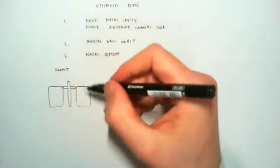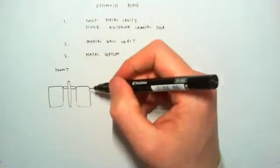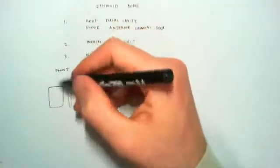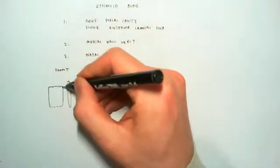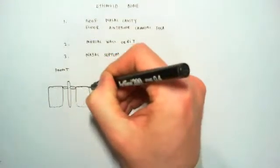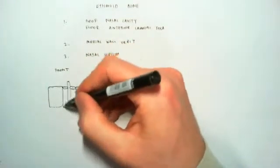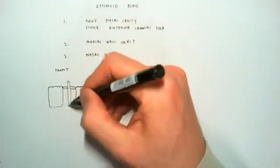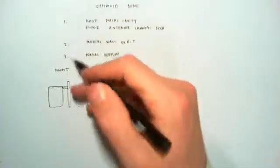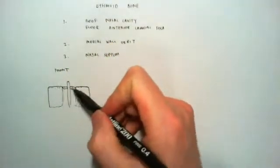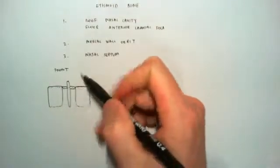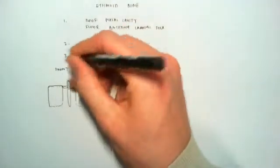I'll explain a bit in a sec. But that's essentially an overview of what it looks like. So, this section here, this part in here, this is the nasal cavity. And this part above it, this is the anterior cranial fossa, and this will be the brain sitting up here.